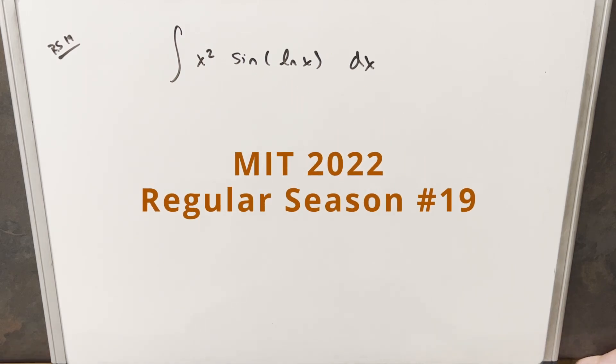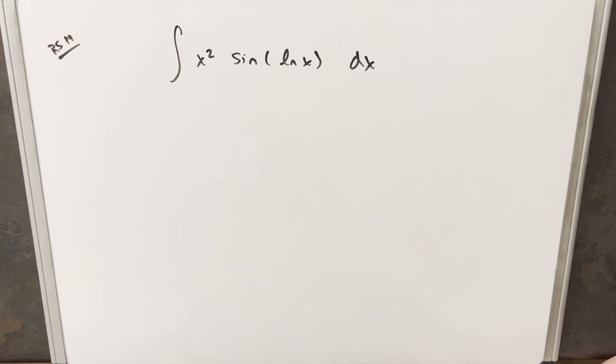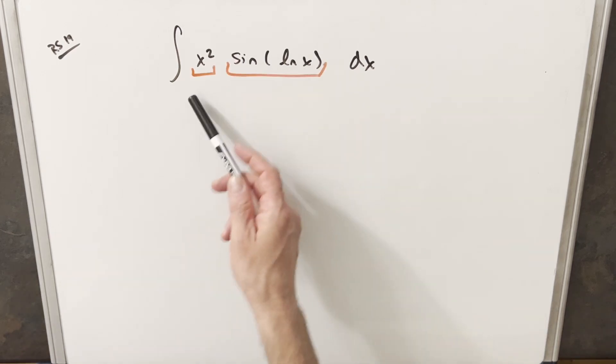We have here today another integral from the MIT Integration Bee. This was from 2022, regular season problem number 19. We have the integral of x squared sine ln x dx. The first thing I notice here is having two functions like this is going to motivate me to use integration by parts, and I think it's going to work out pretty nice.